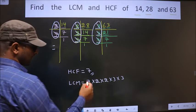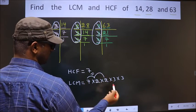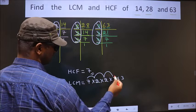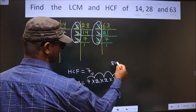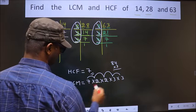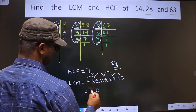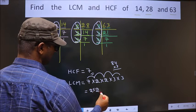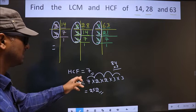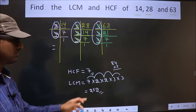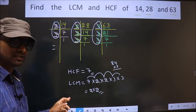That is 7×2 is 14, ×2 is 28, ×3 is 84, ×3... 3×4 is 12, carry 2. 1, 3, 8 is 24 plus 1 is 25. We get 252. This is our LCM and this is our HCF. Am I clear?